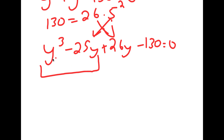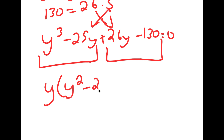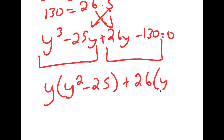So I'm going to group y to the power of 3 minus 25y and 26y minus 130. For y to the power of 3 minus 25y, the greatest common factor is y. So I get y times y squared minus 25, plus from 26y minus 130 I get 26 times y minus 5.